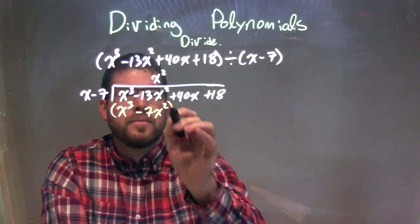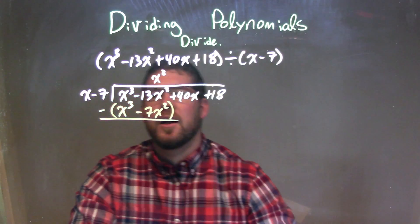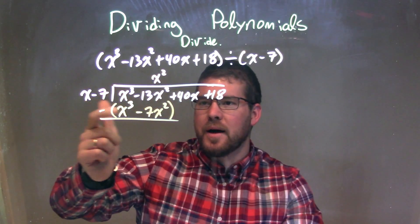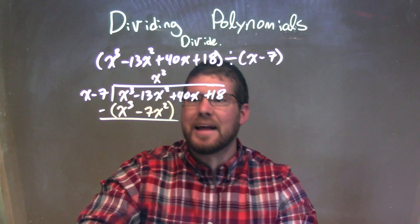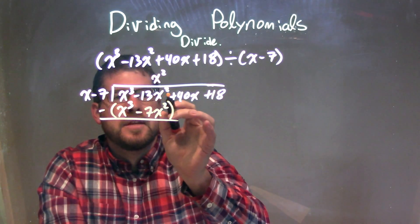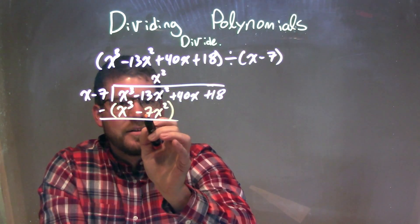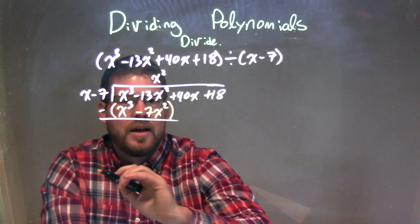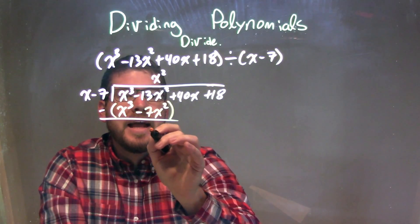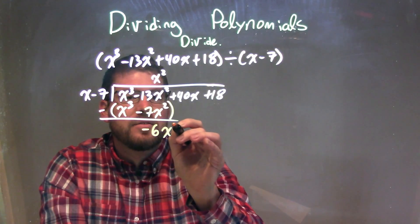Now we're going to subtract the two, top from the bottom. Make sure to put parentheses around it. x to the third minus x to the third is just zero, should cancel out. And minus 13x squared minus a negative 7x squared, like adding a positive 7x squared, comes out to be negative 6x squared.